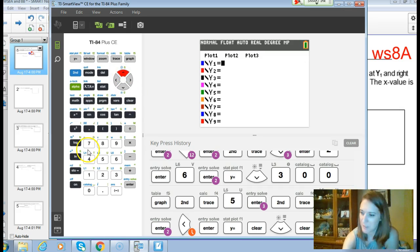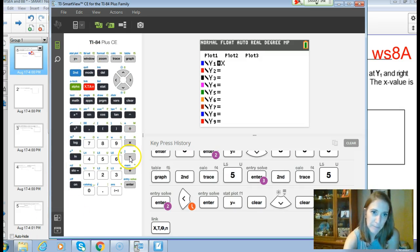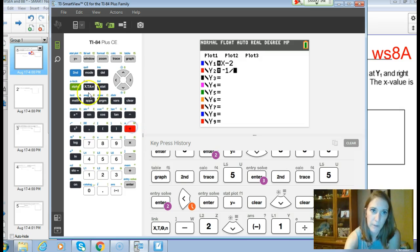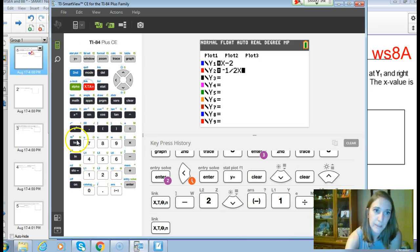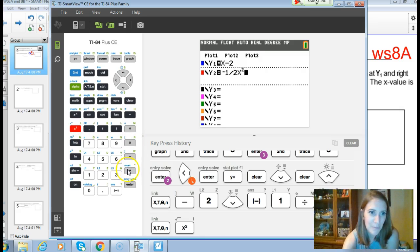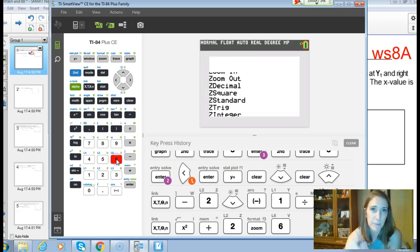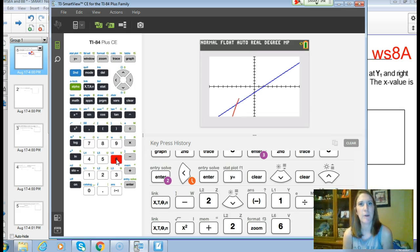Going to our calculator, it doesn't matter which is in y1 and which is in y2, but I'm going to put x minus 2 in y1 and then negative 1 half x squared plus 2 in y2. My window is all messed up from my last problem, so I'm going to hit zoom 6, that nice negative 10 to 10 window.